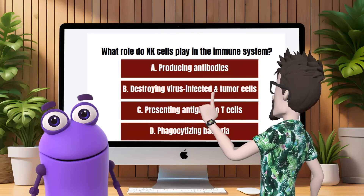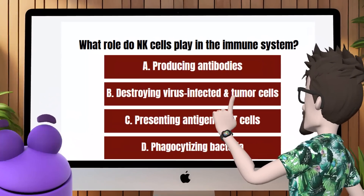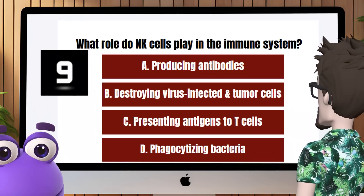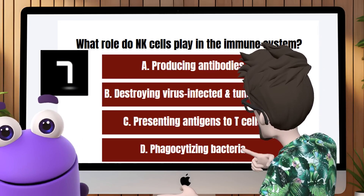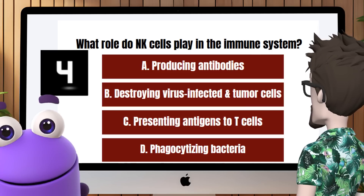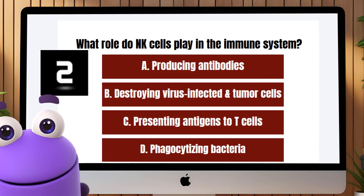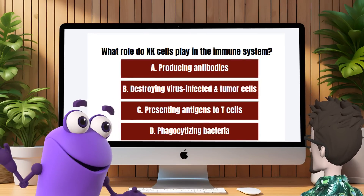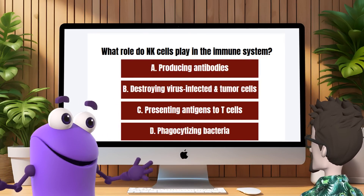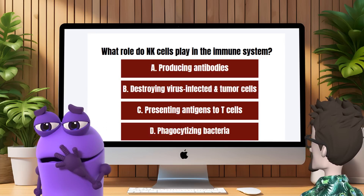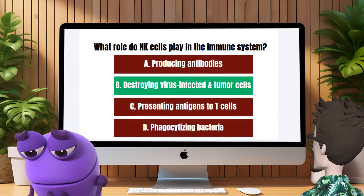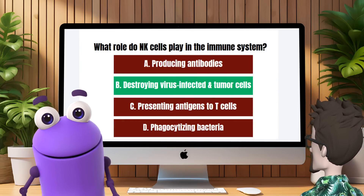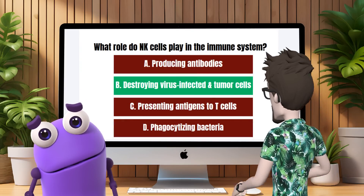Question 5: What role do natural killer cells play in the immune system? I'll go with C, presenting antigens to T cells. Close, but not quite. The correct answer is B, destroying virus-infected and tumor cells. NK cells are critical in recognizing and killing these cells without prior sensitization.